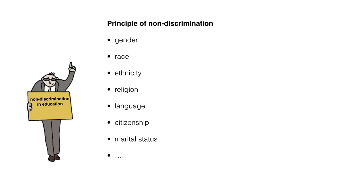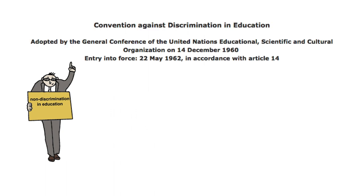The principle of non-discrimination is the basis for building inclusive societies. The Convention Against Discrimination contains the general principles of non-discrimination and the prevention of discrimination in the field of education. Discrimination violates the rights of children.